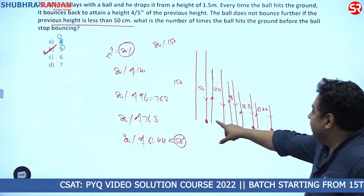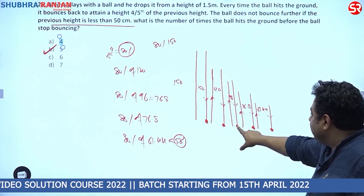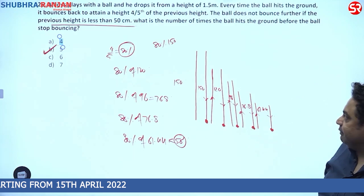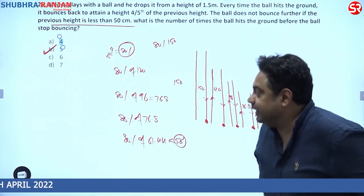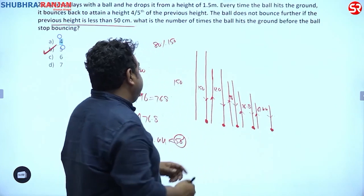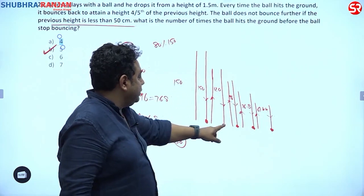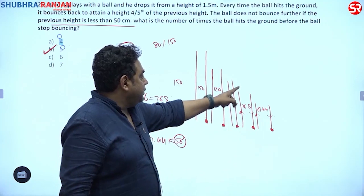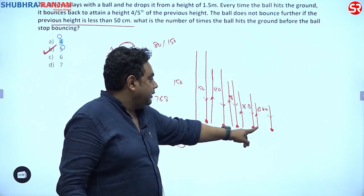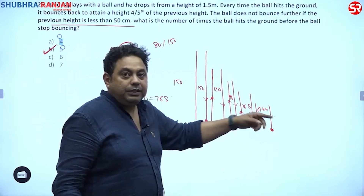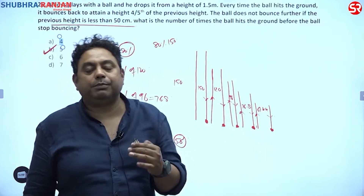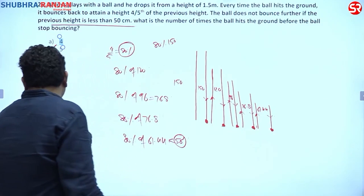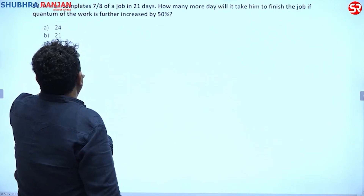Summary of hits: one at 150 cm, one at 120 cm, one at 96 cm, one at 76.8 cm, and one at 61.44 cm. Since four-fifths of 61.44 is less than 50 cm, the ball stops. The ball hits the ground exactly five times.